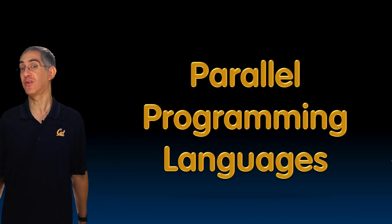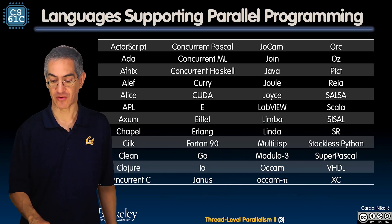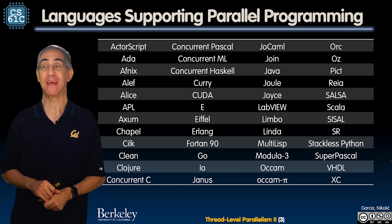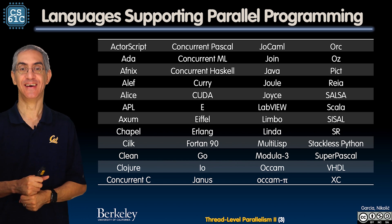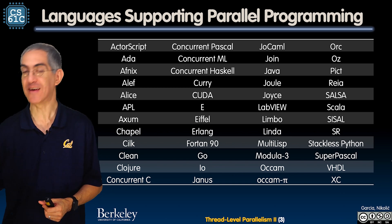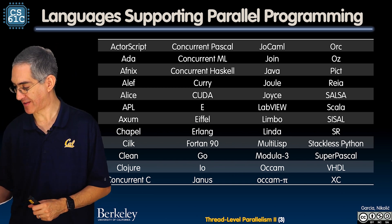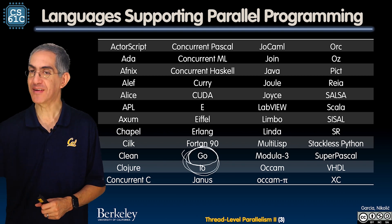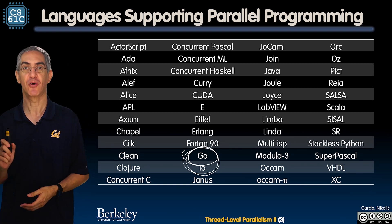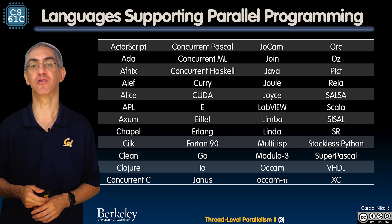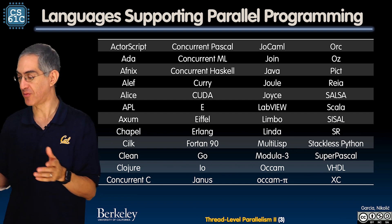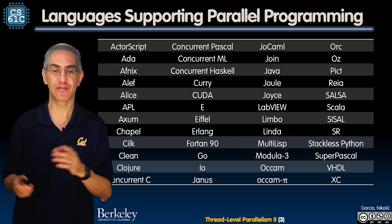We have a choice of programming languages, so let's talk about parallel programming languages and what's out there in this space. These are the languages supporting parallel programming — there are a lot. One language that folks are pointing to is Go. Go is a really nice language. People in this space think that Go might be the future for doing it in a really clean way, so explore Go if you're interested. There are lots of other things here too, including ways to drive your GPU.